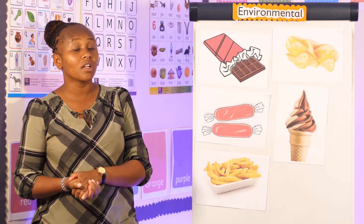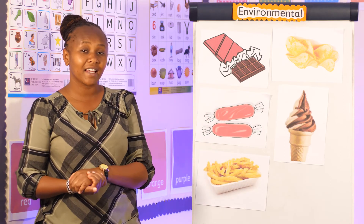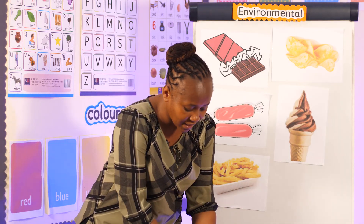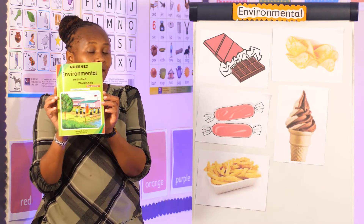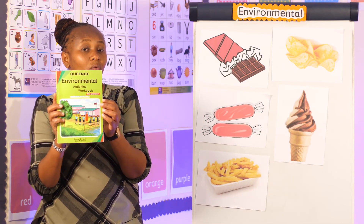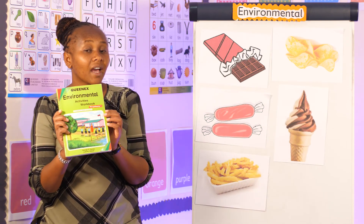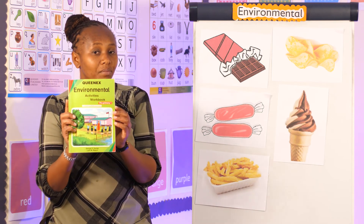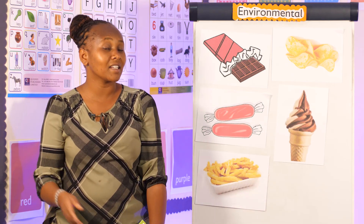These are some of the unhealthy foods that we should avoid eating, or if we eat them, we eat just a little. Now learners, where are we learning all this from? We are learning from this book here. This book has healthy food and unhealthy food, and when you do the work from here you will be able to tell the healthy food and the unhealthy food. Kindly do the work from this book — thank you very much for listening, and bye bye!